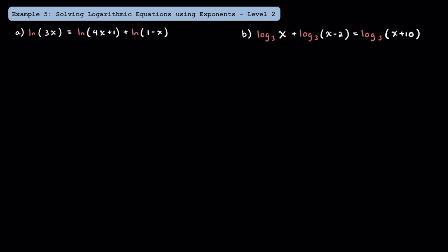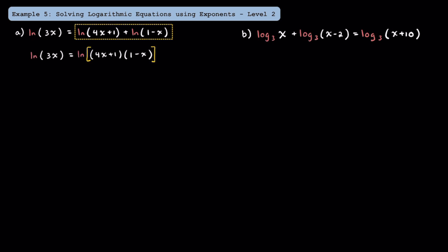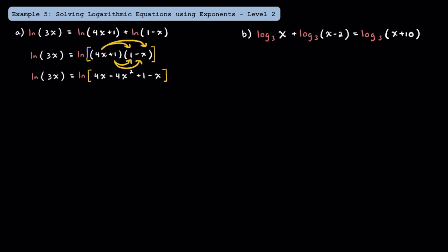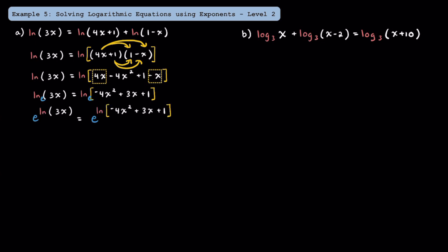In example 5, let's practice solving some more difficult logarithmic equations. First, notice that on the right side we have the sum of two logarithms with the same base, so we'll condense the right side into one logarithm. After condensing, we just have one ln on each side. Now let's multiply these two binomials using FOIL, combine like terms, and then get rid of the ln's by exponentiating both sides with base e. Each e to the ln cancels out, and we're left with 3x is equal to negative 4x squared plus 3x plus 1.